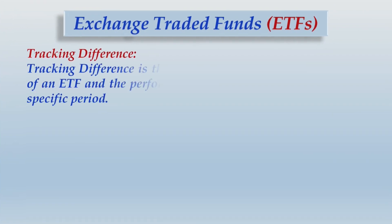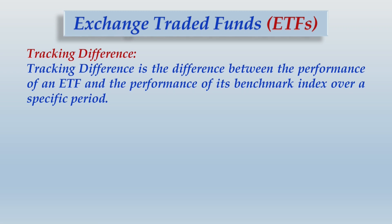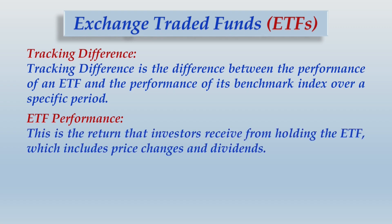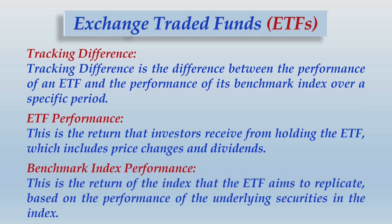Tracking difference is the difference between the performance of an ETF and the performance of its benchmark index over a specific period. ETF performance is the return that investors receive from holding the ETF, which includes price changes and dividends — simply computed as a holding period return. Benchmark index performance is the return of the index that the ETF aims to replicate, based on the performance of the underlying securities in the index.